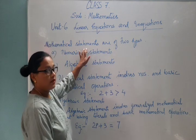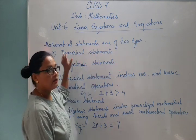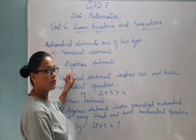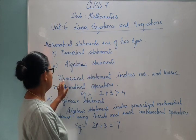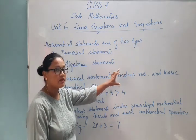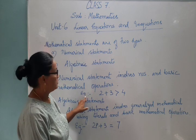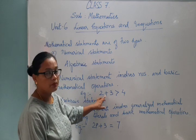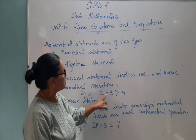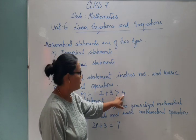Mathematical statements are of two types: numerical statements and algebraic statements. Numerical statements involve numbers and basic mathematical operations. For example, two plus three is greater than four — two plus three equals five, which is greater than four.